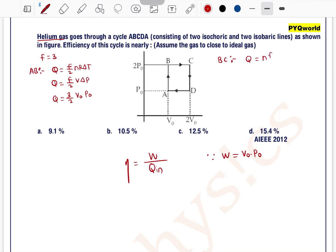And for process BC, BC is the isobaric process. In that case we can write Q equals nC_P delta T, that is n F by 2 R delta T plus nR delta T.